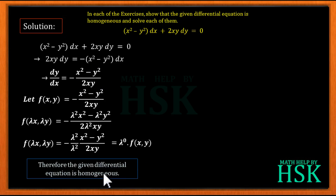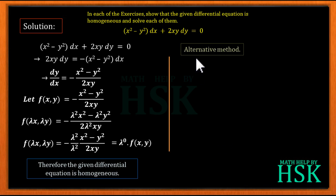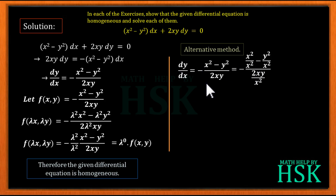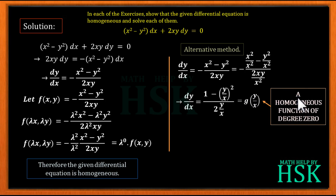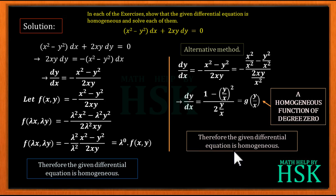We can also show this by an alternative method. We take dy/dx and divide the numerator and denominator by x², giving dy/dx equal to (1 minus (y/x)²) upon 2·(y/x). This can be written as g(y/x), a homogeneous function of degree 0. Therefore, by this method also, we can show that the given differential equation is homogeneous.